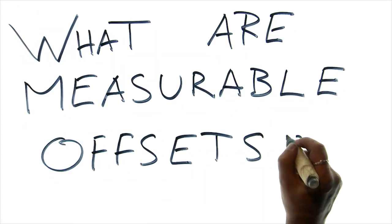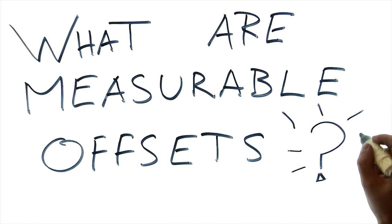What are measurable offsets? Or why do we need them?